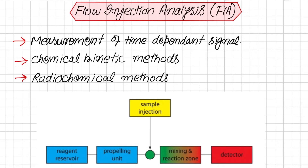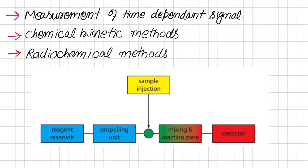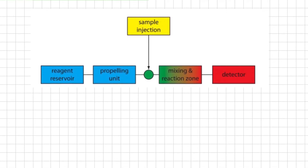Flow injection analysis was developed in the mid-1970s and is a highly efficient technique for the automated analysis of samples. Unlike centrifugal analyzers where samples are limited by the number of transfer disk sizes, FIA allows for the rapid sequential analysis of an unlimited number of samples. FIA is one example of a continuous flow analyzer in which we sequentially introduce samples at timed intervals into a liquid carrier stream that transports them to the detector.